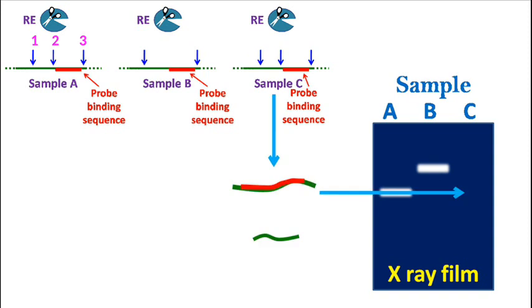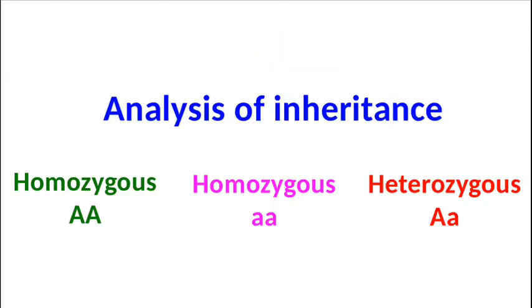And the restriction pattern of sample C will be the same as that of sample A. This kind of analysis is widely used in the analysis of alleles and inheritance patterns of a specific gene.